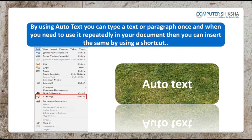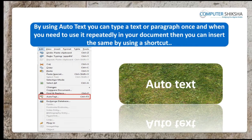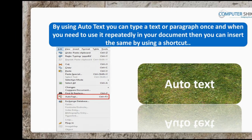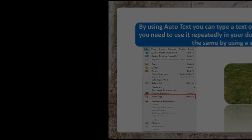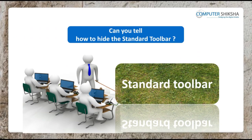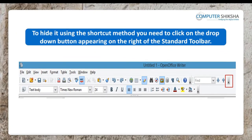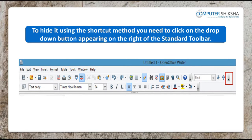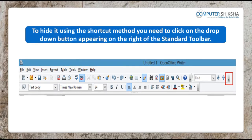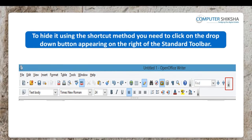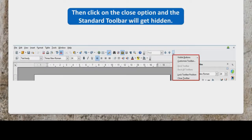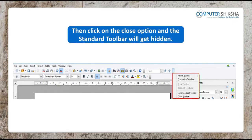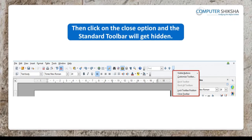How can you hide the standard toolbar? To hide it using the shortcut method, you need to click on the drop-down button appearing on the right of the standard toolbar. From the box that opens, click on the close option and the standard toolbar will get hidden.